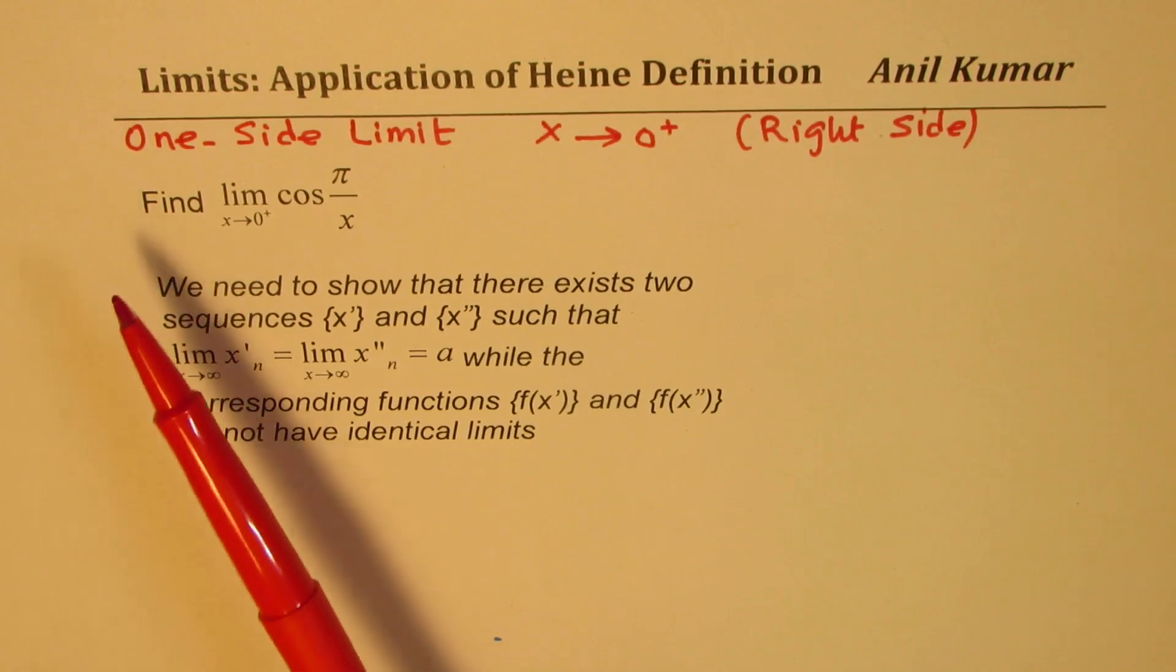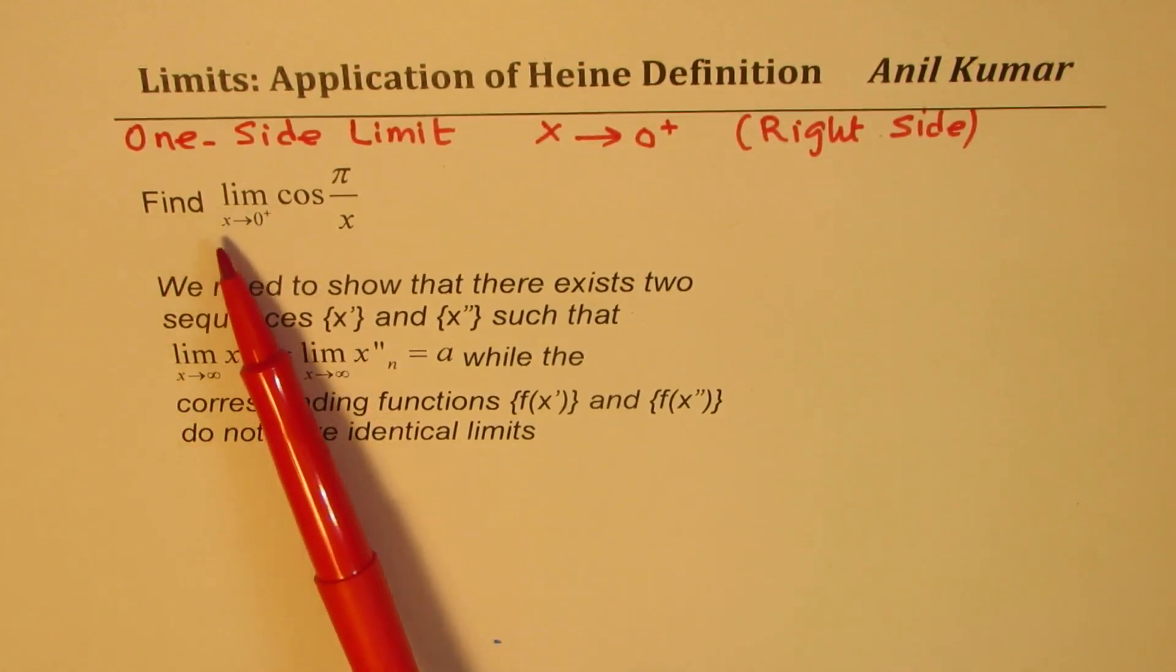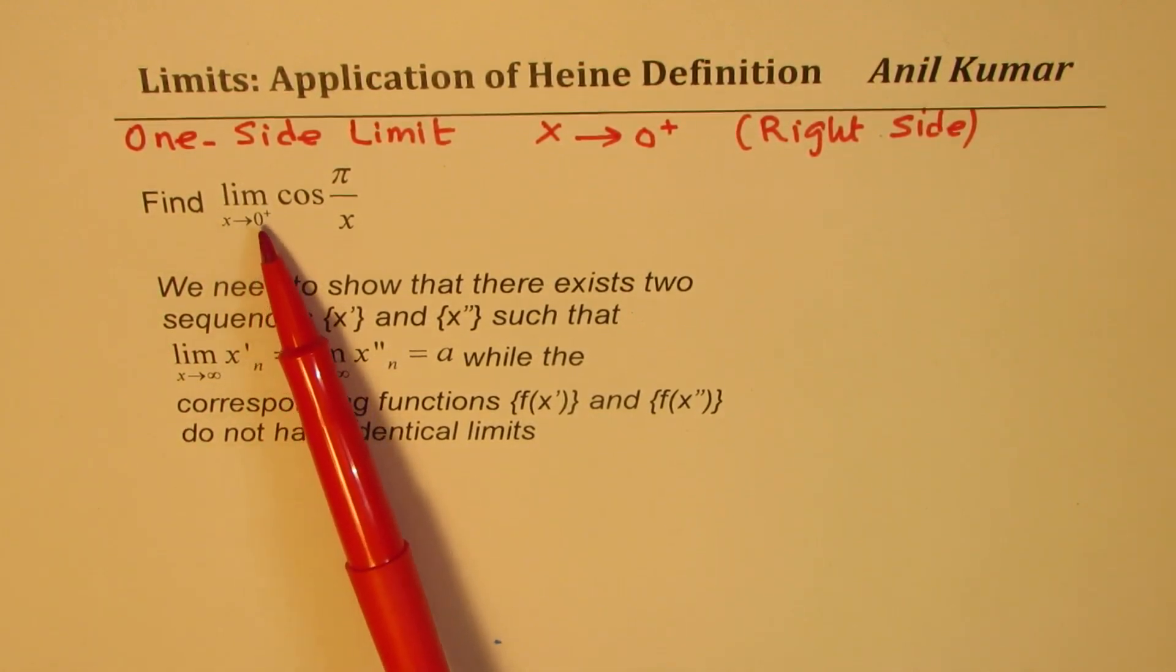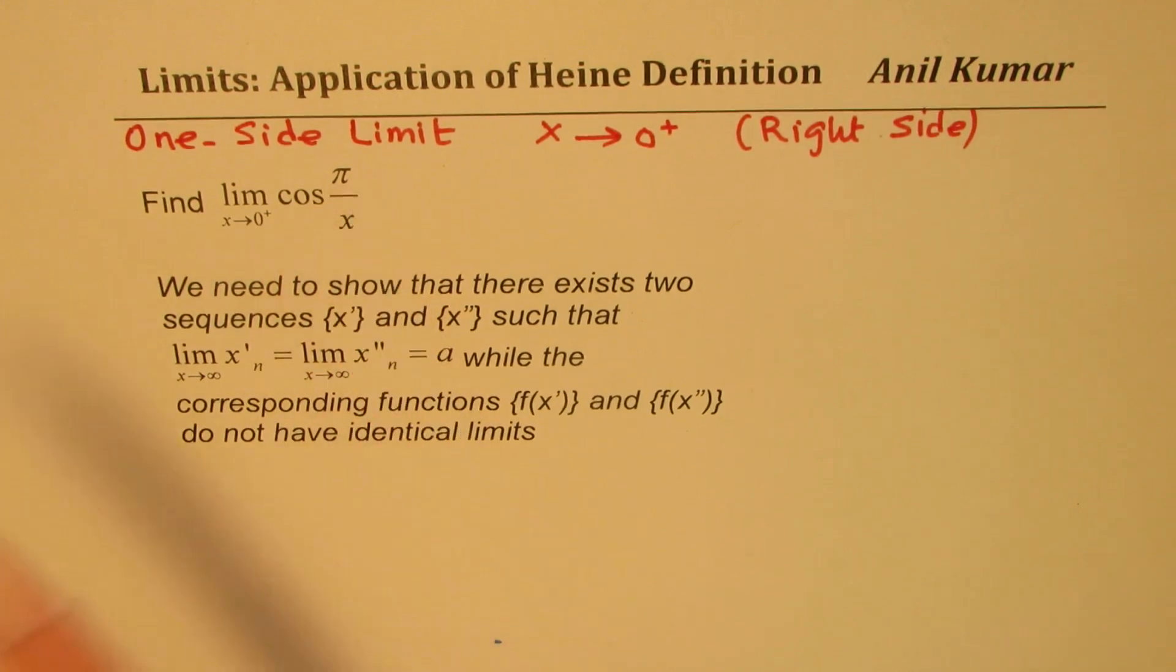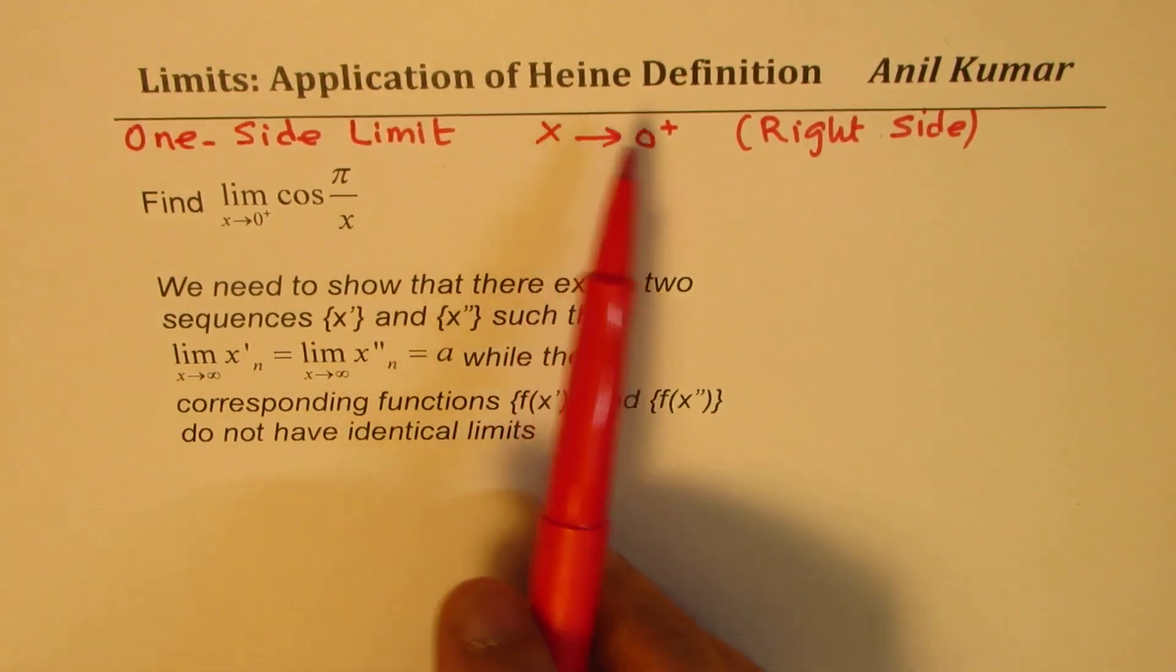Now the question here is find the limit as x approaches 0 from the right side for cos π by x. You can pause the video and solve and look into my solution later to check. The concept we are going to use to find this one-side limit is based on Heine's definition.